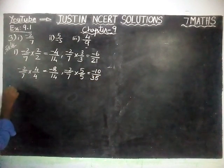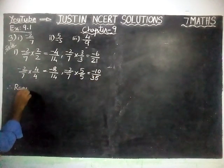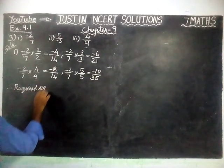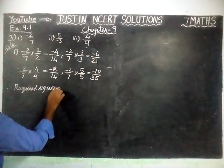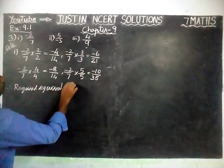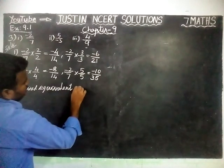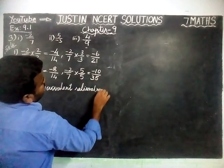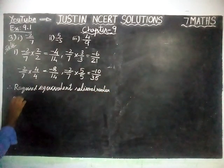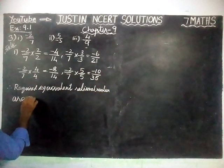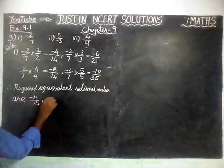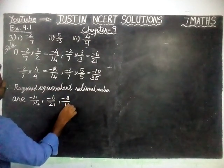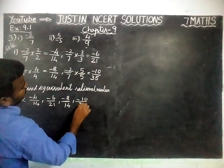Therefore, the required rational numbers are: minus 4 by 14, minus 6 by 21, minus 8 by 14, minus 10 by 35.